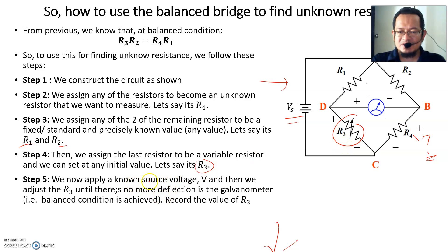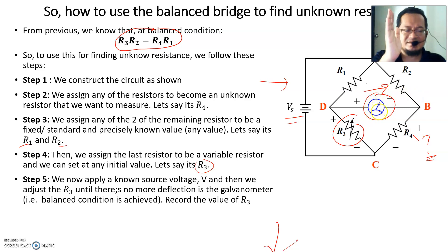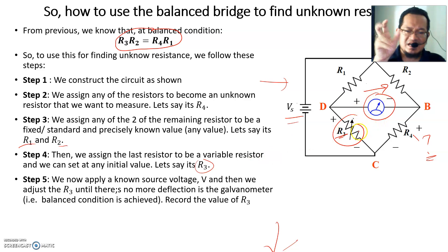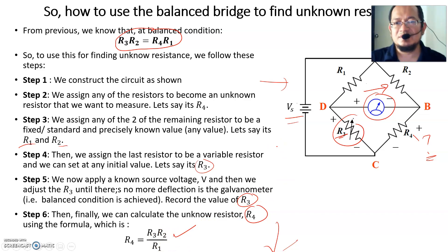Fifth, apply a non-zero voltage source. Observe the galvanometer — initially the circuit may not be balanced and the needle will deflect left or right depending on the initial value of R3. Sixth, adjust R3 up or down until there is no deflection of the galvanometer. Record the value of R3 at balance. Then calculate the unknown R4 using the formula: R4 = R3 × R2 / R1.